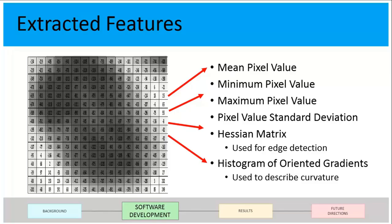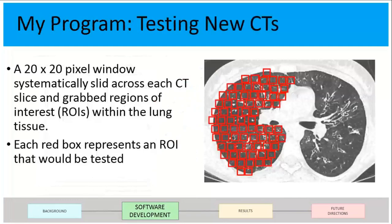An image is just a matrix of pixels, and pixels are a visual representation of numbers. The features I extracted were the mean pixel value, minimum pixel value, maximum pixel value, and standard deviation. I also used a Hessian matrix, which looks for edge detection — airways have that distinct airway wall, so that's what it detects. Another feature was the histogram of oriented gradients, which looks at curvature. Airways have a circular ovoid shape, and the histogram of oriented gradients detects that curvature.